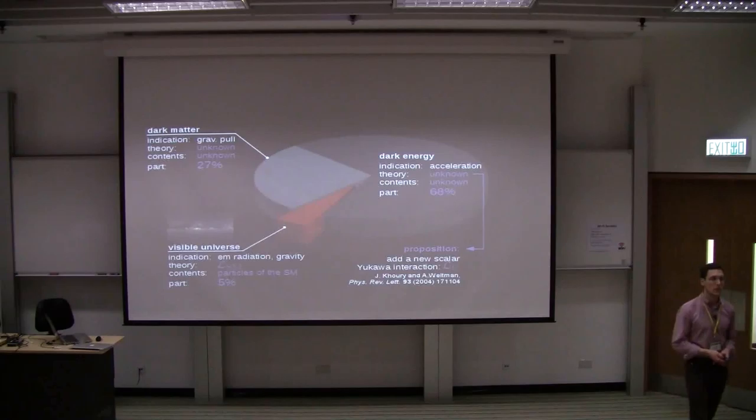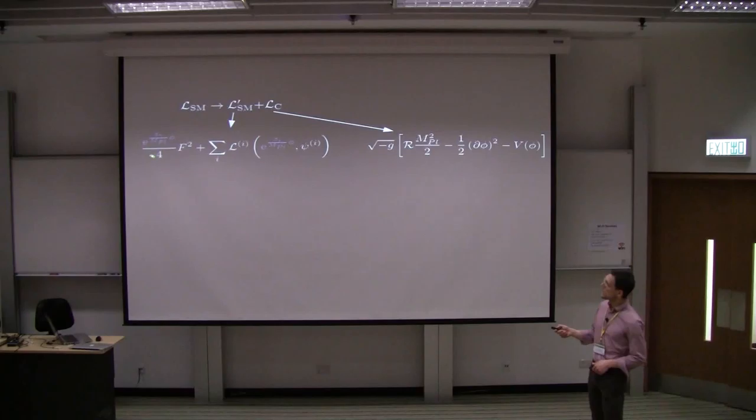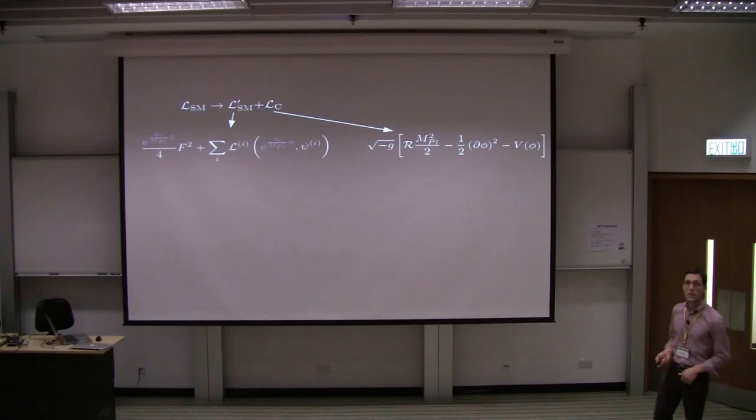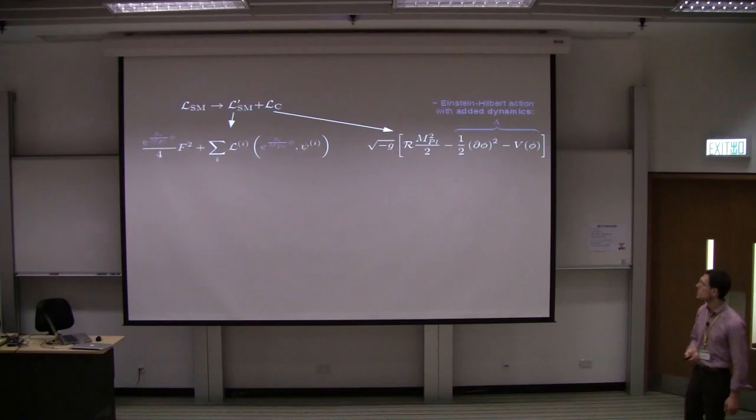In 2004, Khoury and Weltman have suggested to add a new scalar Yukawa interaction to the standard model. So what you do is, you have the standard model, you change it, and you add additional dynamics. It looks like this. So what you have here is, in the photon sector, you add exponential terms here with a coupling beta. This would be the mass sector with possibly a different coupling. It doesn't need to be different. Then you have additional dynamics. The ones of you who know a bit about general relativity see that this is basically the Einstein-Hilbert action with the cosmological constant being replaced by the dynamics of the new scalar field.